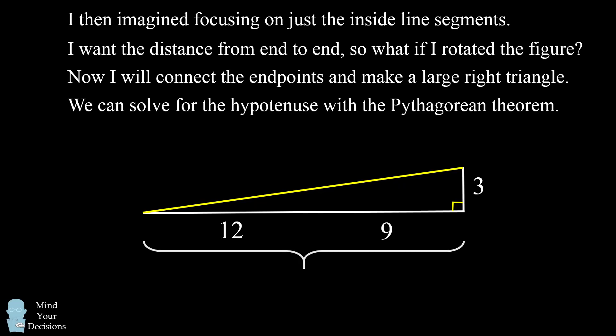So we can then solve for the distance using the Pythagorean theorem. We have one leg of the triangle that's 12 plus 9 or 21. And another leg which is 3. So the length of the hypotenuse is the square root of 21 squared plus 3 squared. This becomes the square root of 450, which is also equal to the square root of 225 times 2, which then becomes 15 times the square root of 2.